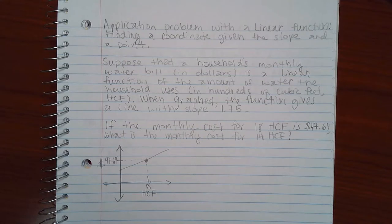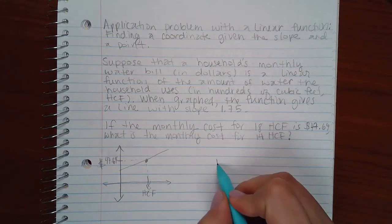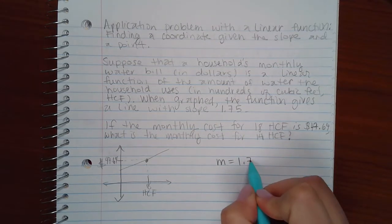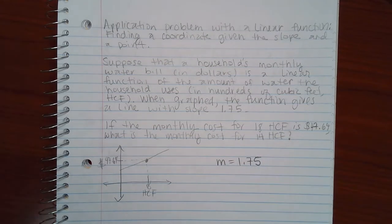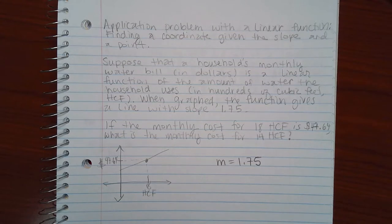When graphed, the function gives the line with slope of 1.75. If the monthly cost for 18 HCF is $47.64, what is the monthly cost for 14 HCF?